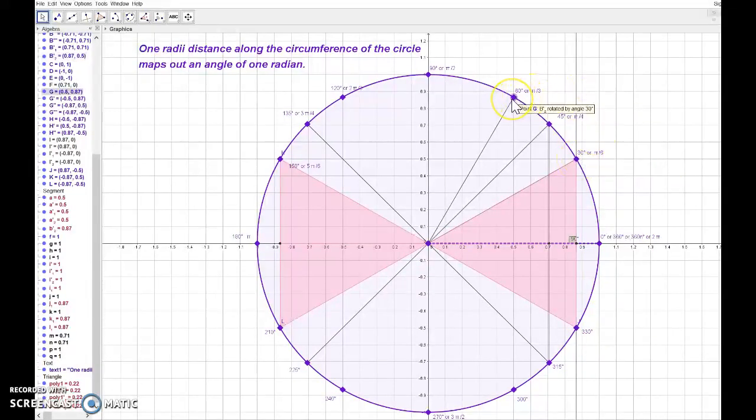So we start at pi over 6, 2 pi over 6, 3 pi over 6, 4 pi over 6, 5 pi over 6, 6 pi over 6 or pi.